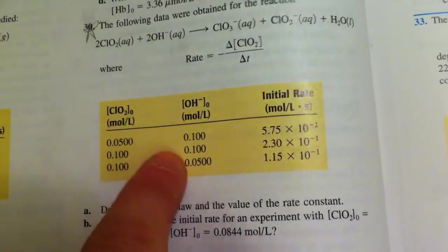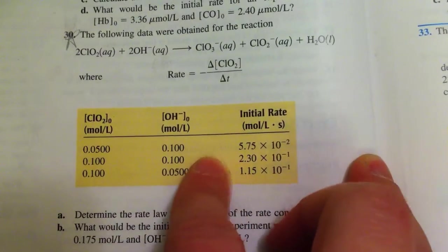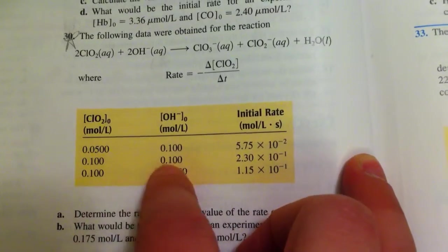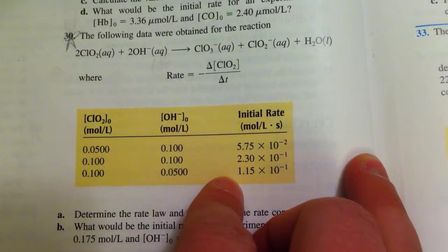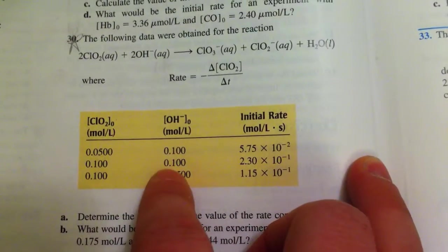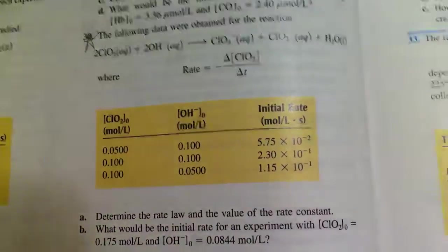If we look for the next trial, we see 0.1 and 0.1 is the same, 0.1 to 0.5 is halved, 2.3 to 1.15 is halved, so the exponent of the OH is going to be 1.